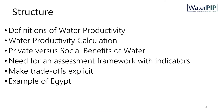This is the structure of the MOOC. First, I will repeat several definitions of water productivity. Then I will explain how to calculate water productivity. I will explain the difference between private and social benefits of water. Then I will explain the need for an assessment framework with several indicators to make trade-offs between indicators explicit. And I will showcase the assessment framework on the basis of the example of Egypt.